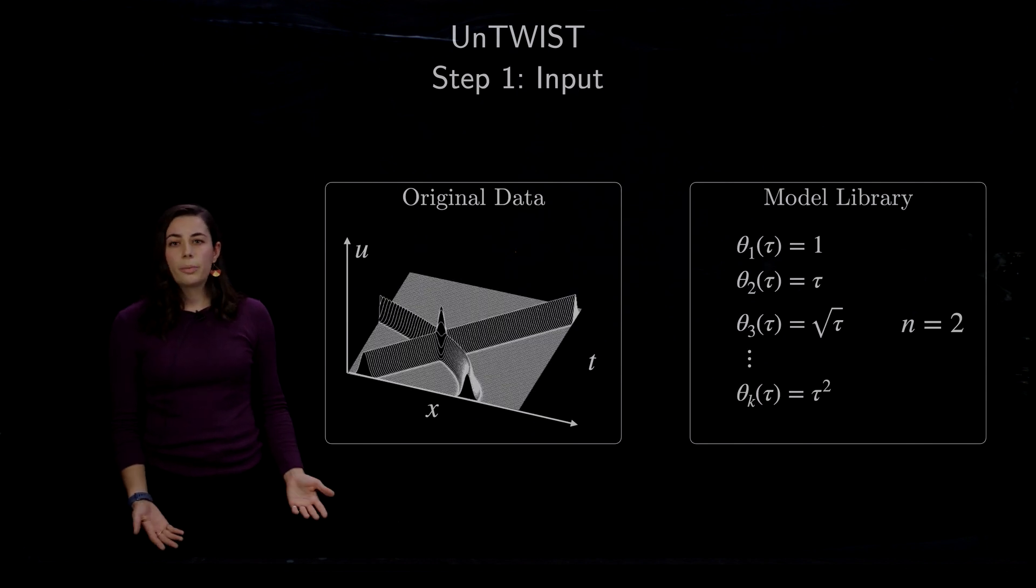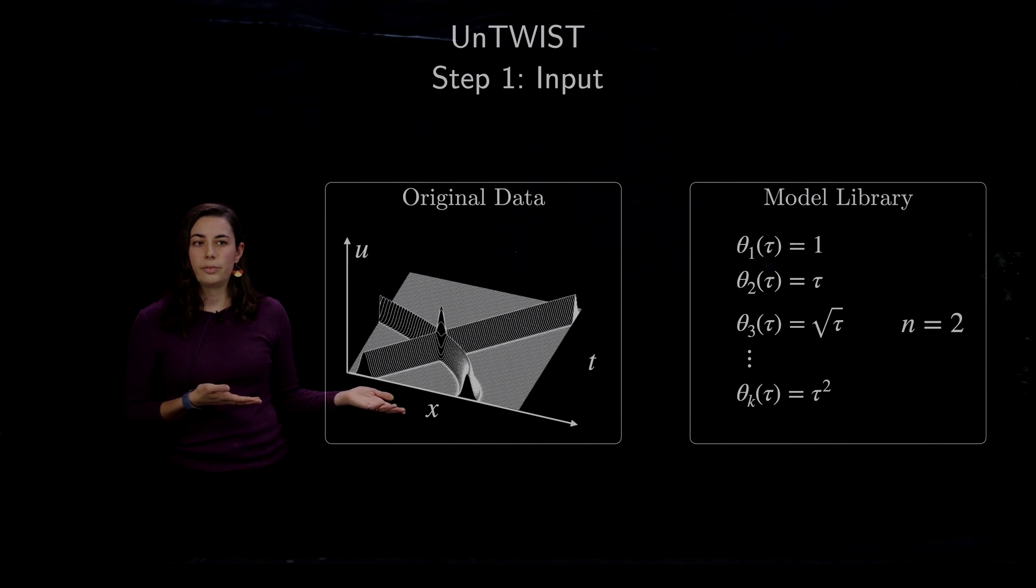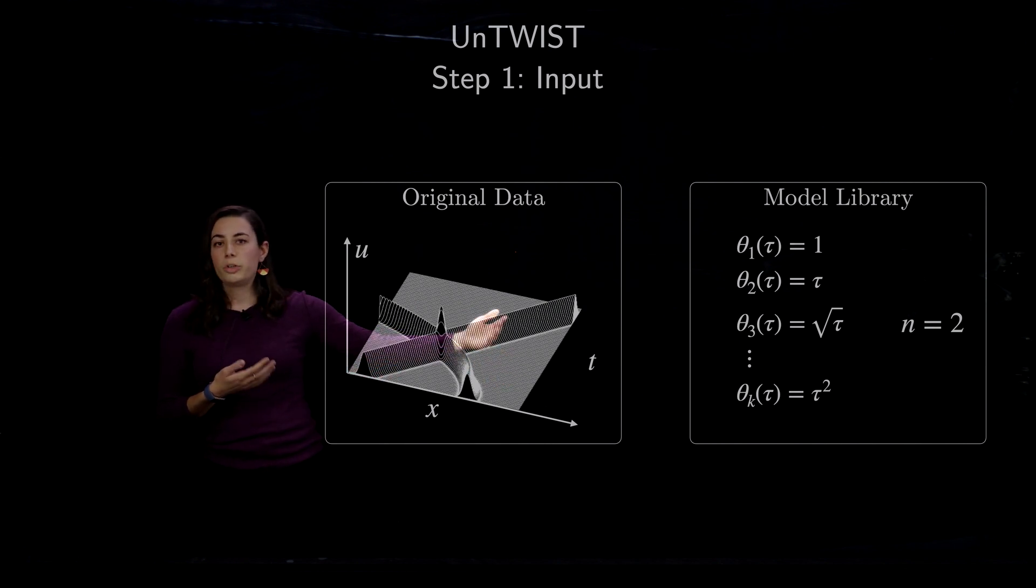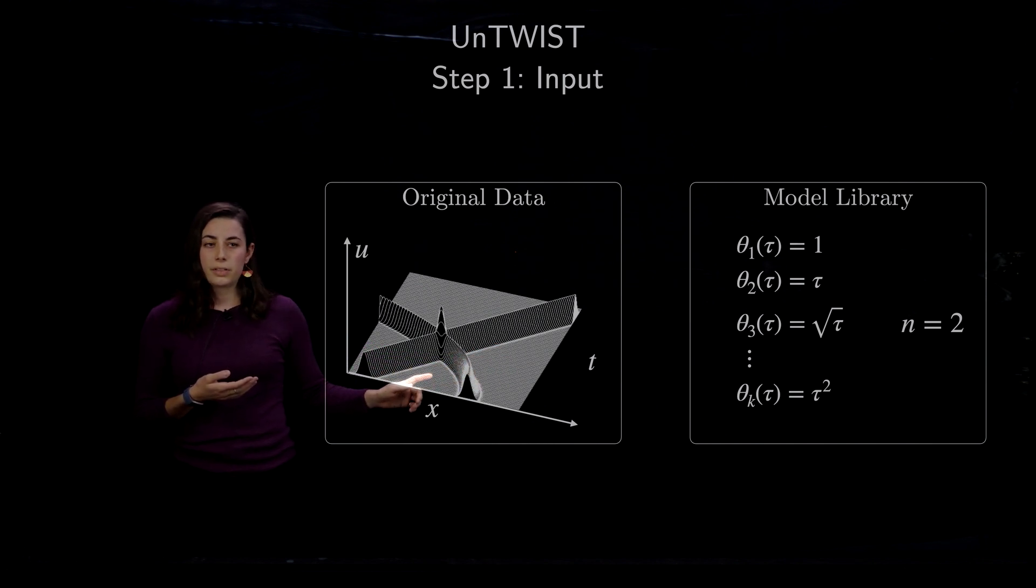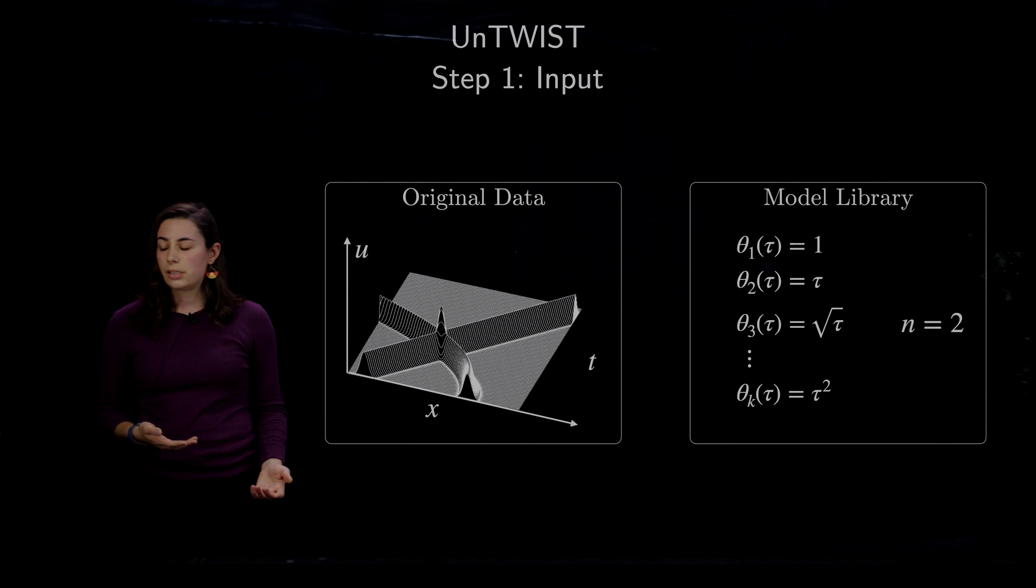Now the most complex version that I'm going to go through is with multiple waves of constant or non-constant speeds. So here I'll use this example of my original data where I have one constant wave and one non-constant wave that are intersecting. We're going to again provide a model library which will contain any potential wave speed functions that we would like to use to represent either of these waves. We also have to use a variable n that tells us the number of waves that we're looking for so that we can initialize our system properly.